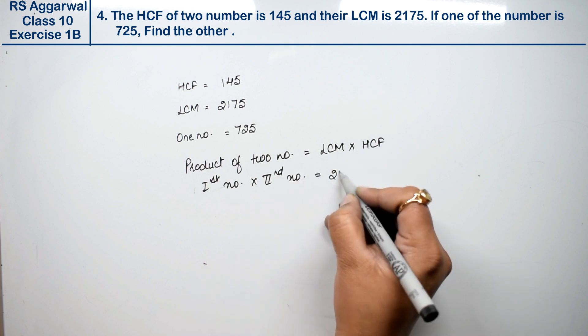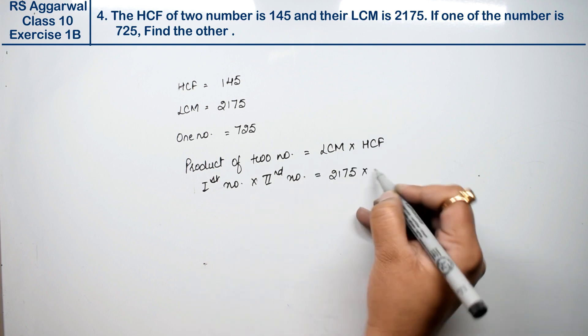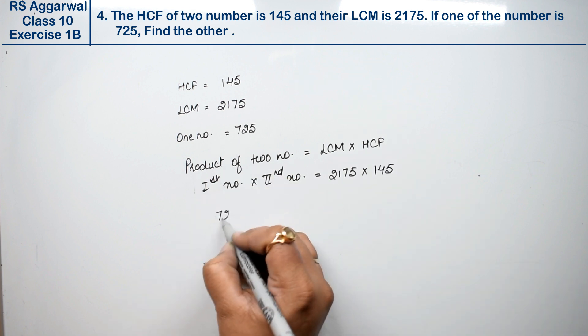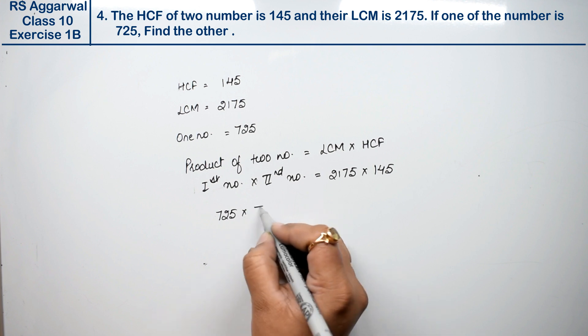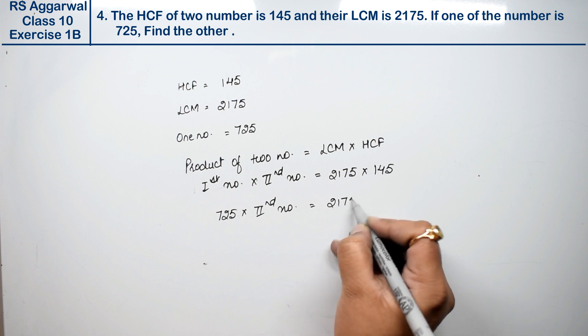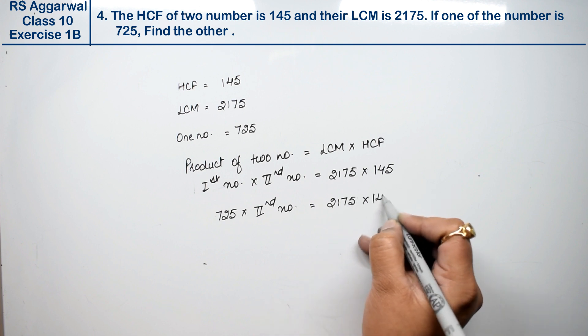LCM is 2175 and HCF is 145. So 725 times the second number equals 2175 times 145.